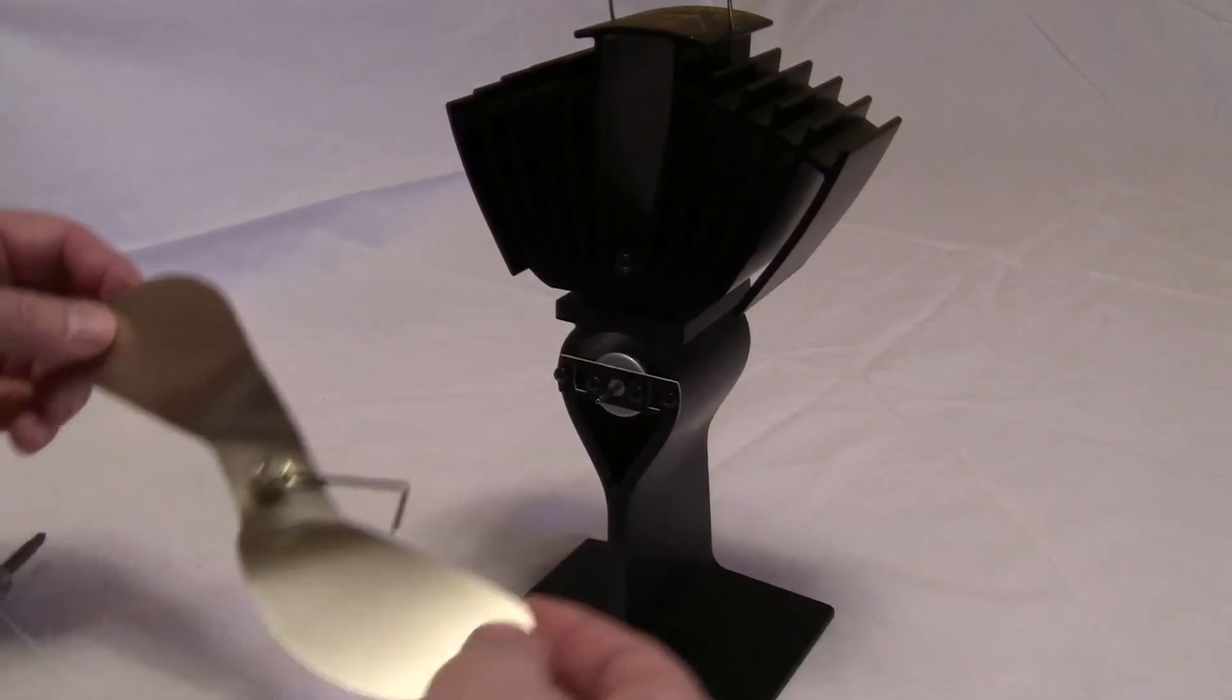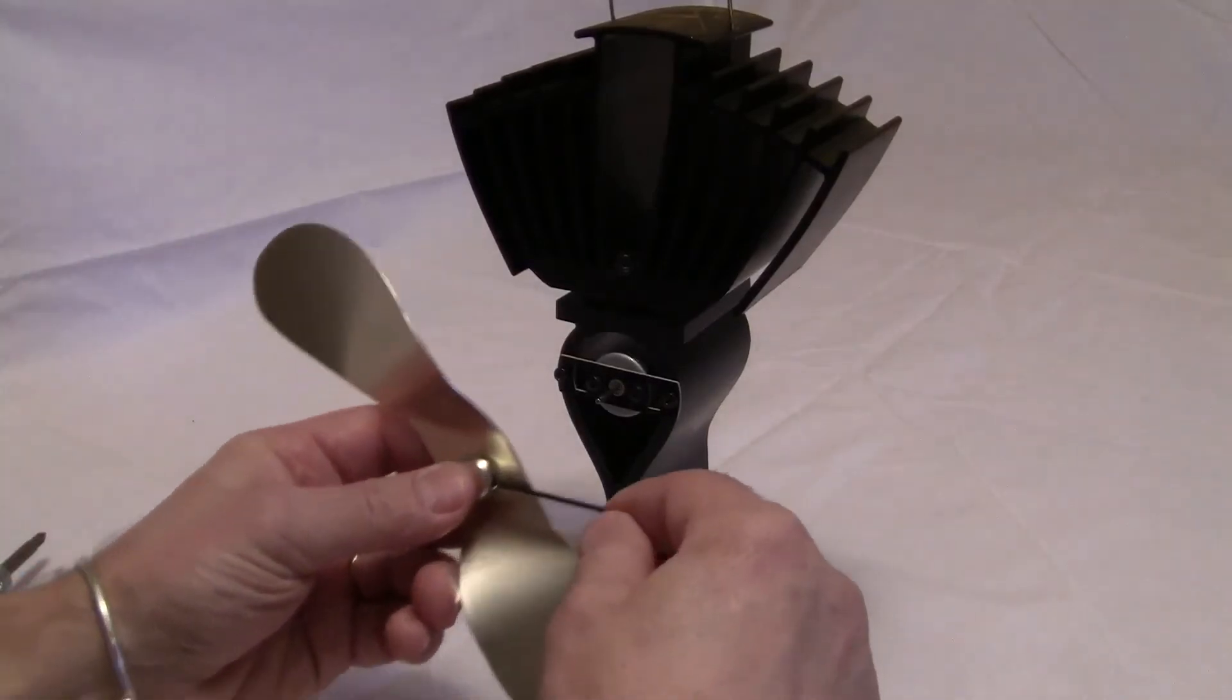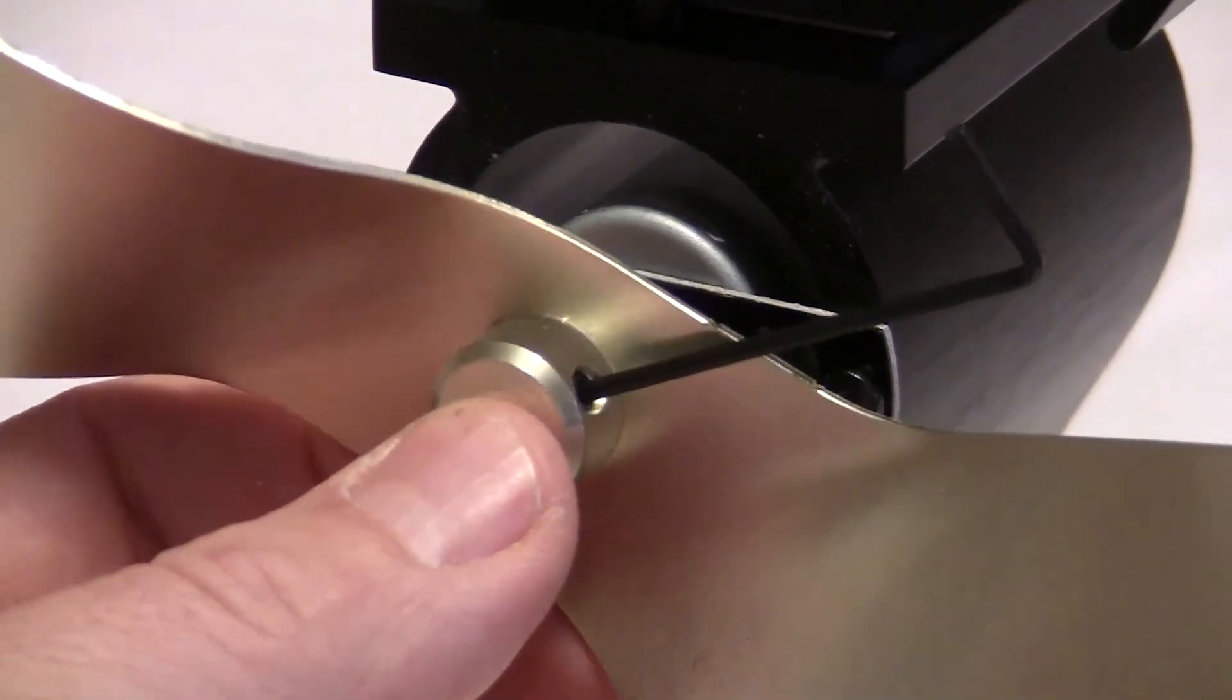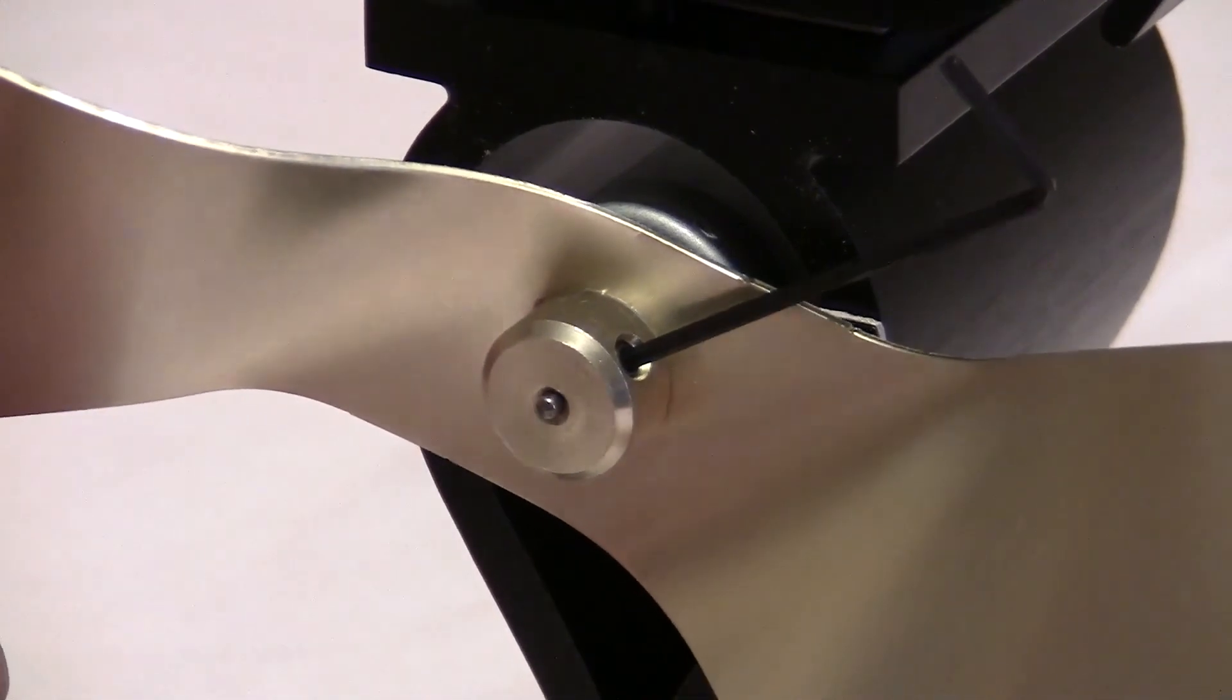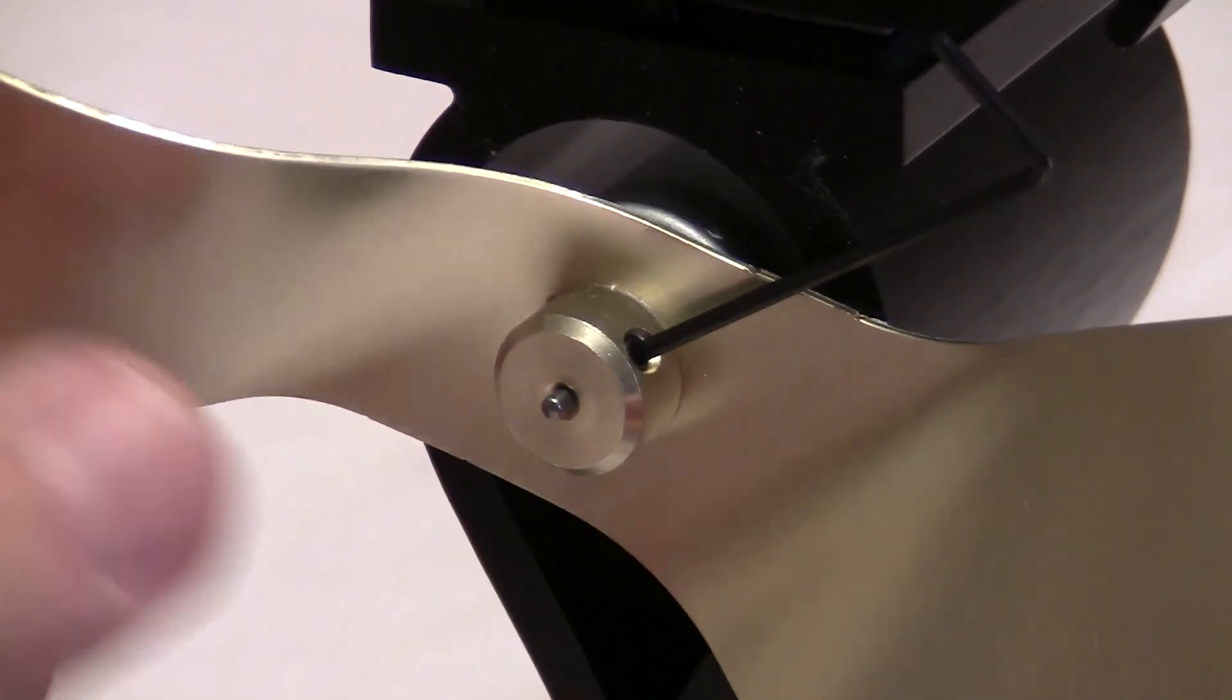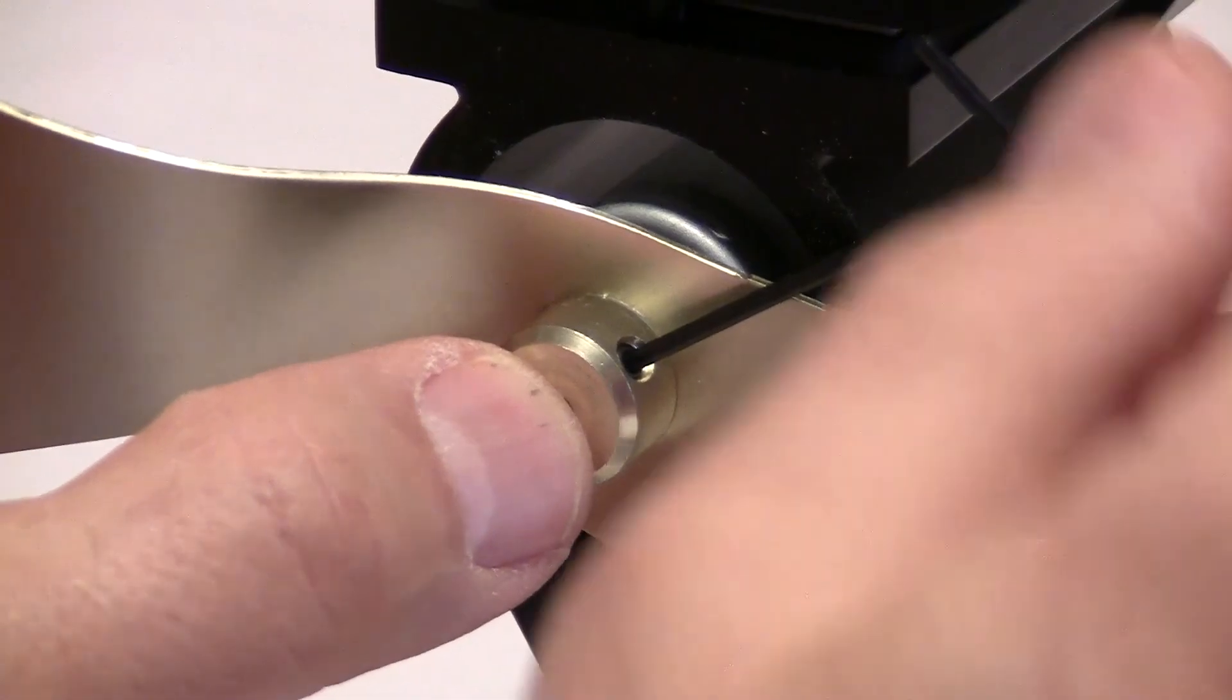Next what we want to do is take our blade and put it back on the hub, making sure that the edge of the unit is flush.